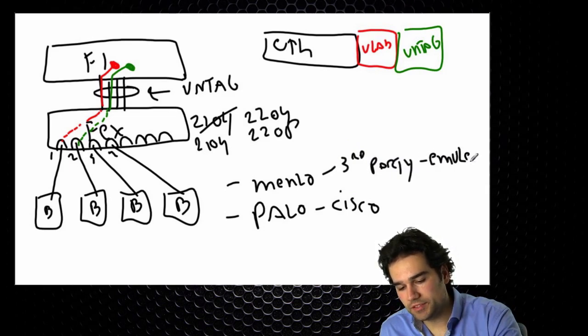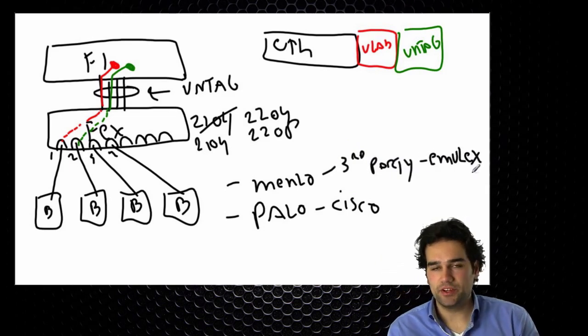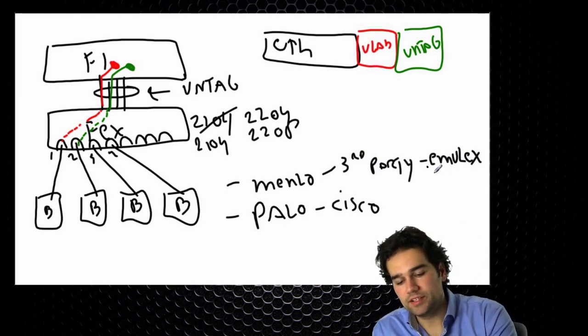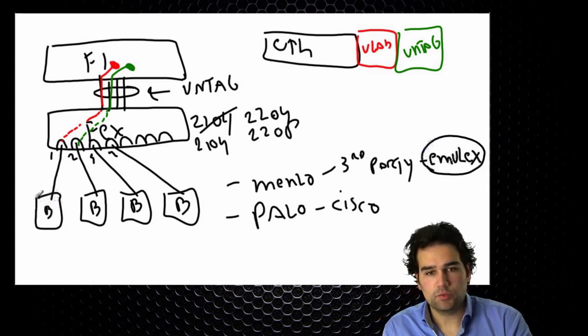And the one that they're using in the lab is Emulex. It doesn't matter in terms of technology what kind of vendor delivered that. But it means that a third party delivered the network interface card here in the server.